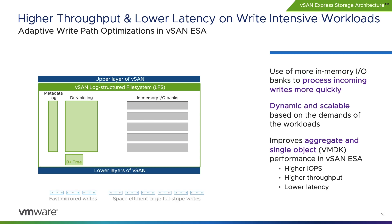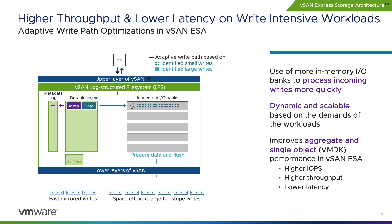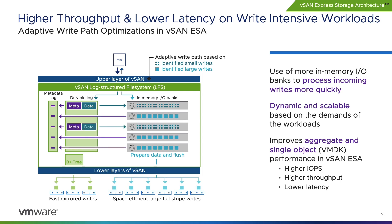Since the initial release of the Express Storage Architecture in vSAN 8, VMware continues to optimize the stack. In vSAN 8 Update 2, we introduce an optimization with ESA's adaptive write path that helps the ESA ingest and process data more quickly. This enhancement uses additional in-memory I/O banks to be available for processing full-stripe writes, resulting in improved performance for workloads driving high I/O to single-object VMDKs, as well as aggregate cluster performance.